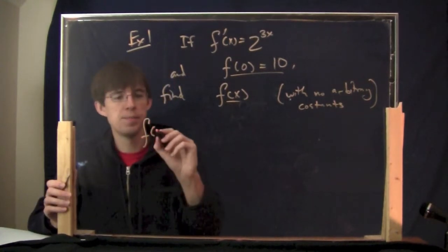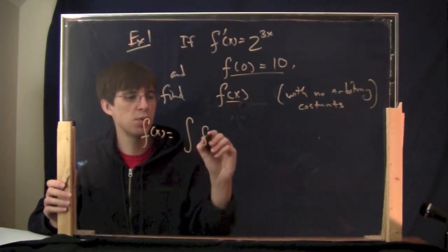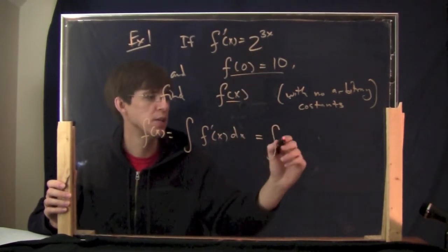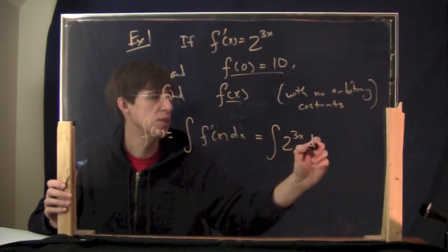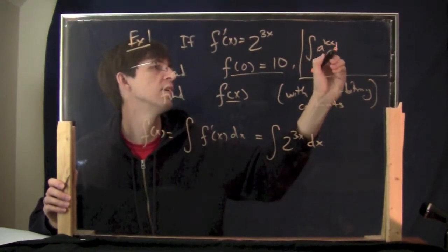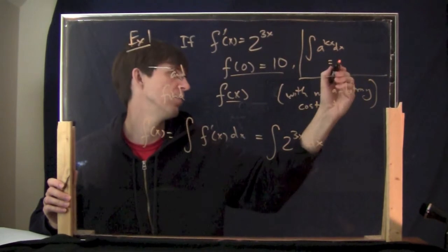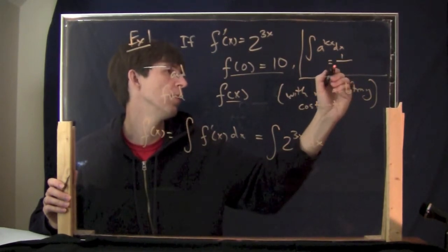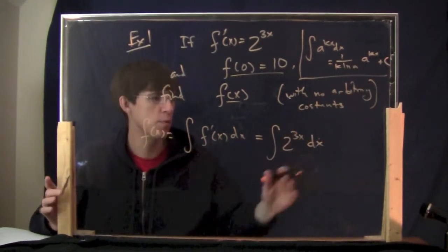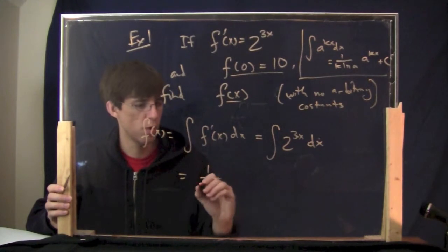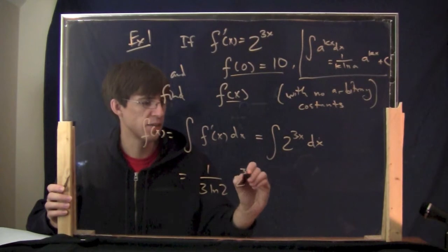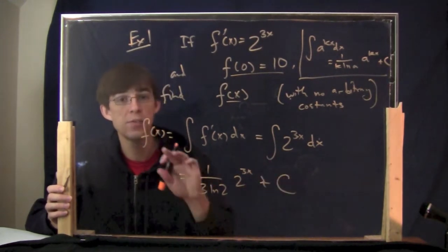So f of x, because of what I just said, is equal to the integral of f prime of x dx, and we can do this. You plug that in: integral of 2 to the 3x dx. I hope you remember your formula for something that looks like that. This would be the integral of a to the kx dx, and the answer is 1 over k ln a times a to the kx plus c. In this case, what we get is 1 over 3 natural log of 2 times 2 to the 3x plus c. That's what f of x is.